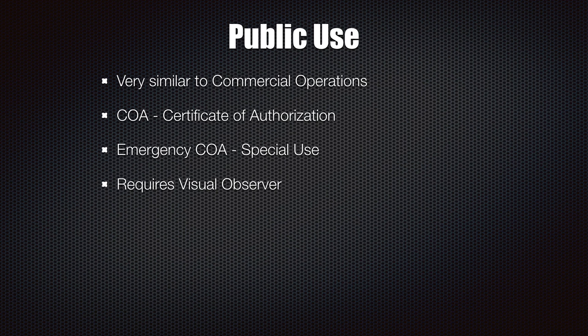One thing that a public use agency can do that many others cannot is receive an emergency COA. If you have to do an operation where you cannot follow the standard rules — for example, a hazardous materials situation where you need to fly out of line of sight — you can request an emergency COA via a 24-hour number. They can grant a special use flight or COA to allow you to break that one rule you're normally required to follow. A Part 107 person can also request a waiver, but right now it's a written process that could take 90 days, whereas an emergency COA can be obtained in 30 minutes to two hours. So it's much faster.